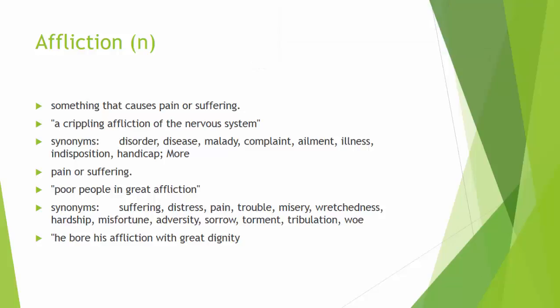Remember, in the homework you have to come up with your own definition if you're doing the vocab square option. So the definition here is something that causes pain or suffering, but make sure you come up with your own definition. Sentence: he has a crippling affliction of the nervous system.